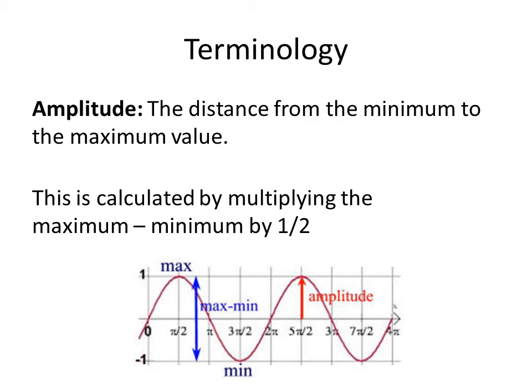In this particular picture, our maximum value is at one and our minimum value is at negative one. So by subtracting the difference between the max and the min, we get how high and how low the graph goes. In this case, one minus negative one is two, and by multiplying that by one-half, your amplitude is one. It is simply the value calculated by multiplying the maximum minus the minimum by one-half.